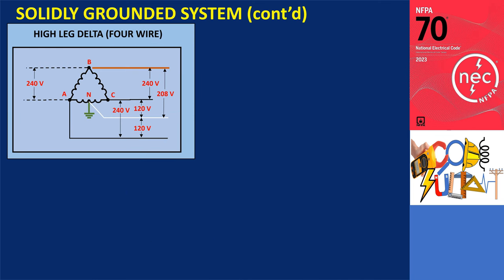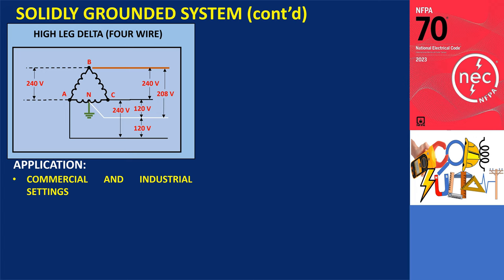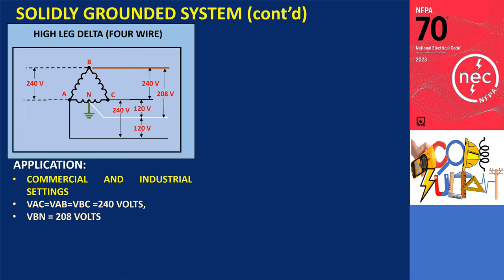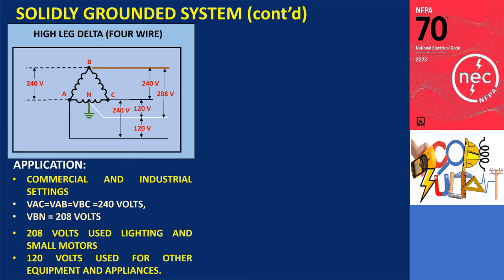Four-wire delta, also known as high leg delta, is a type of electrical distribution system commonly used in commercial and industrial settings. It is a three-phase system using a combination of a center-tap transformer and three-phase transformers. One phase winding is center-tapped to create a neutral connection, while the other two windings are connected in a delta configuration. The voltage between any two phases is typically 240 volts, while the high leg — also known as the wild leg or stinger leg — and the neutral is typically 208 volts.